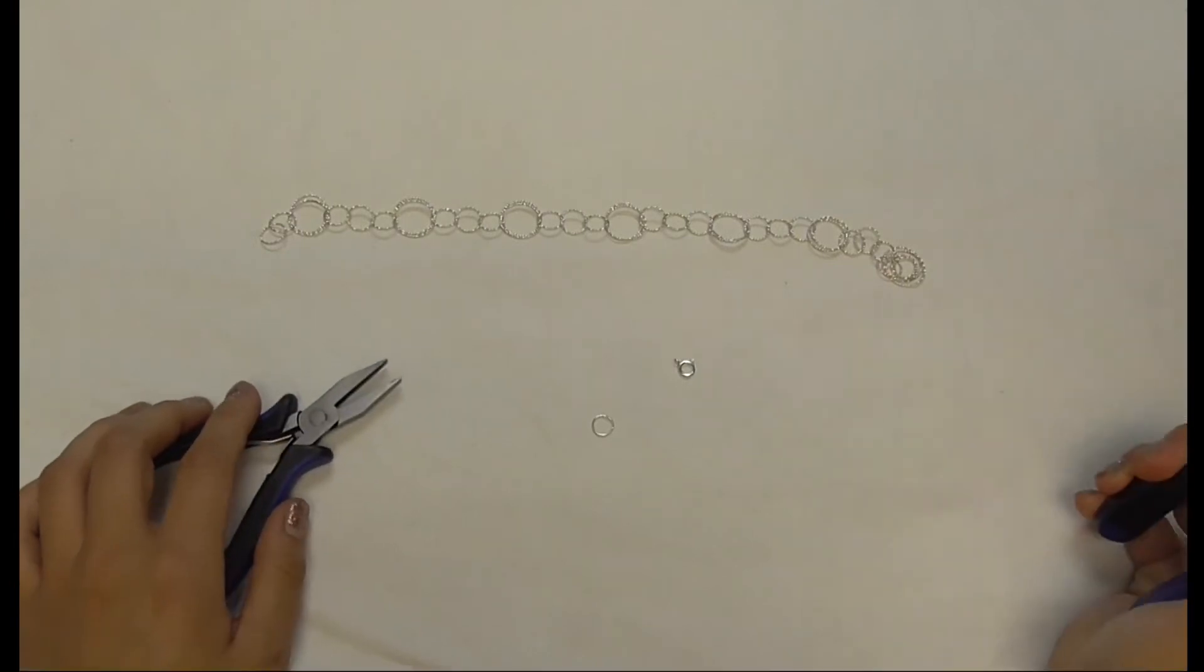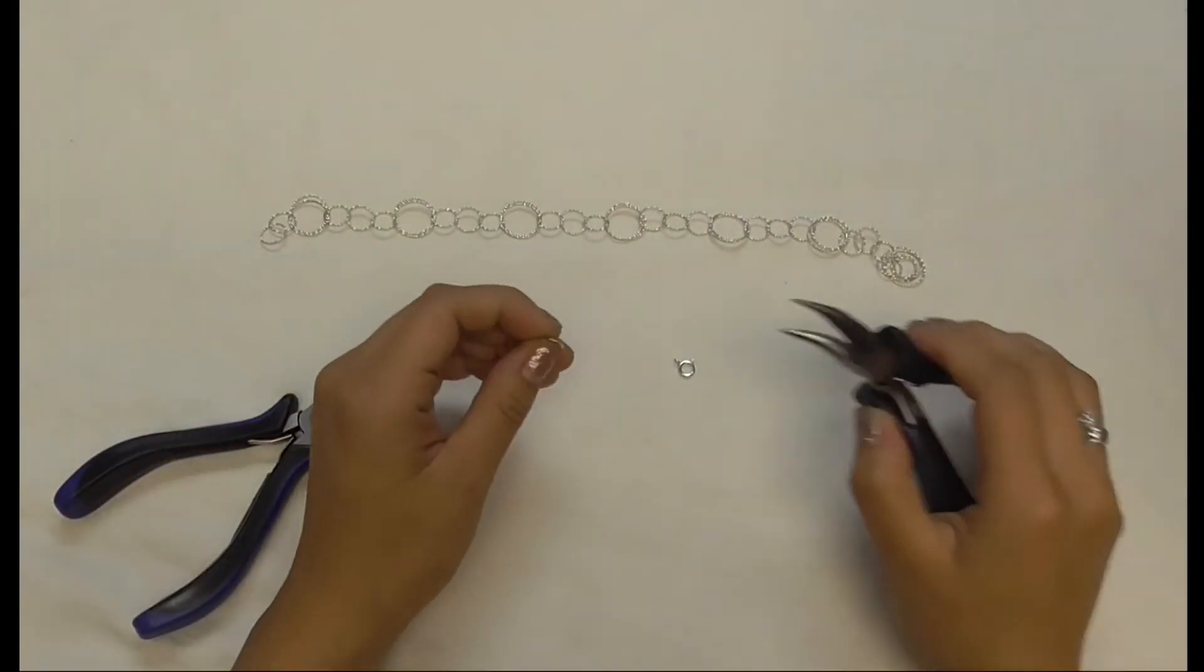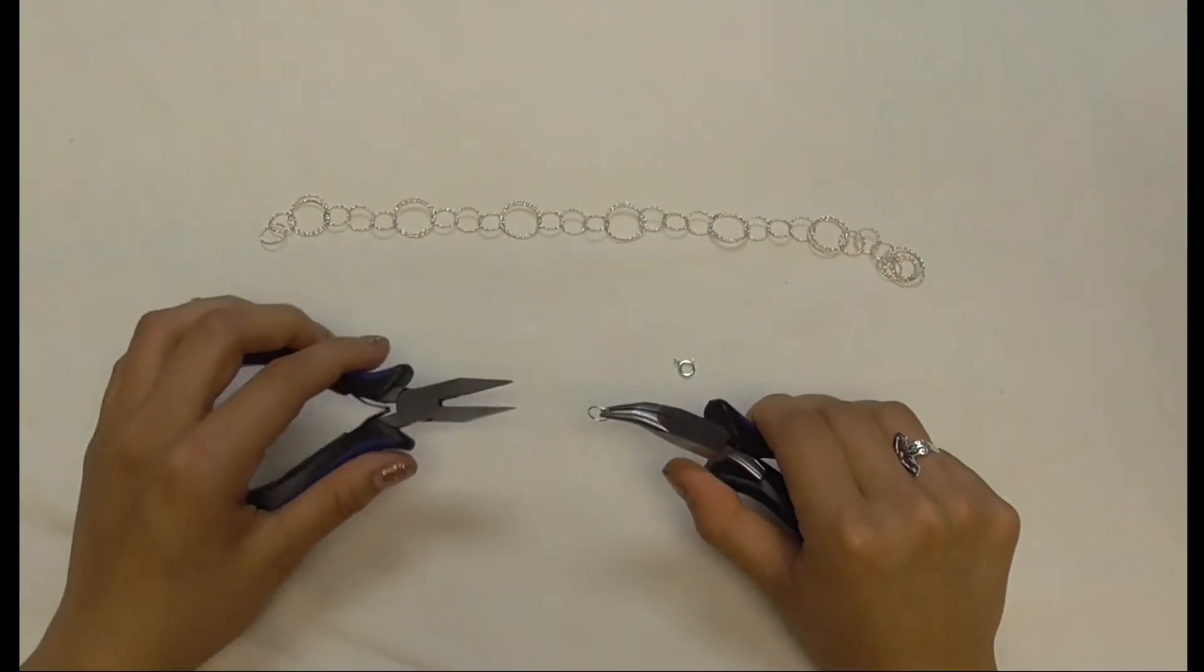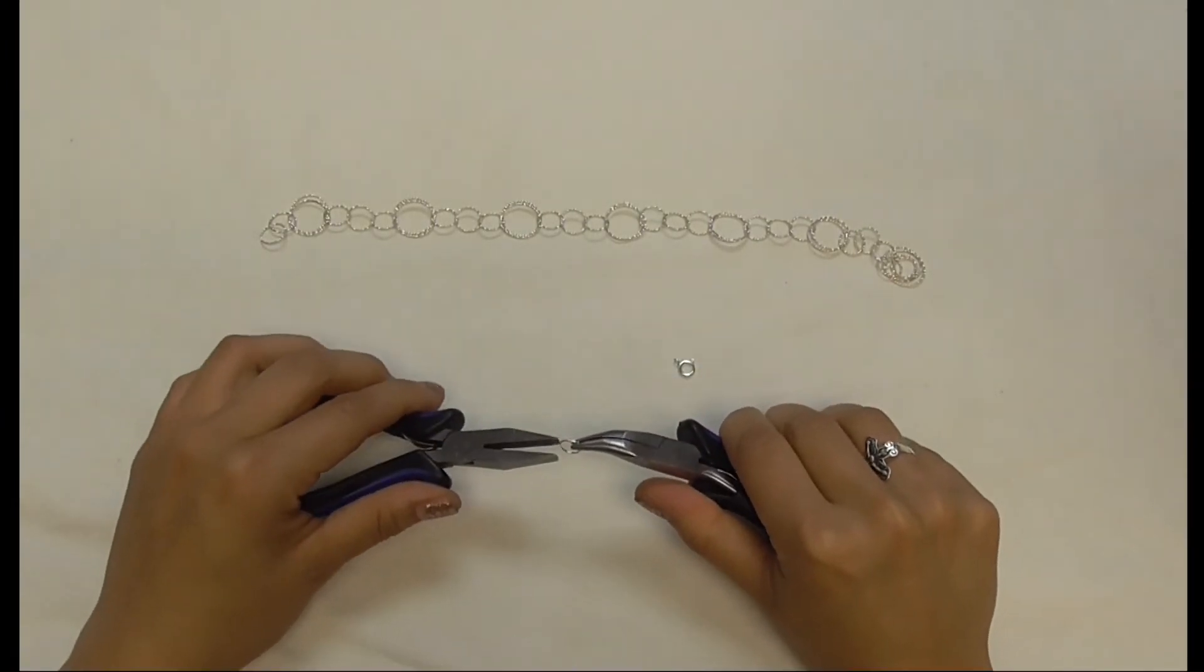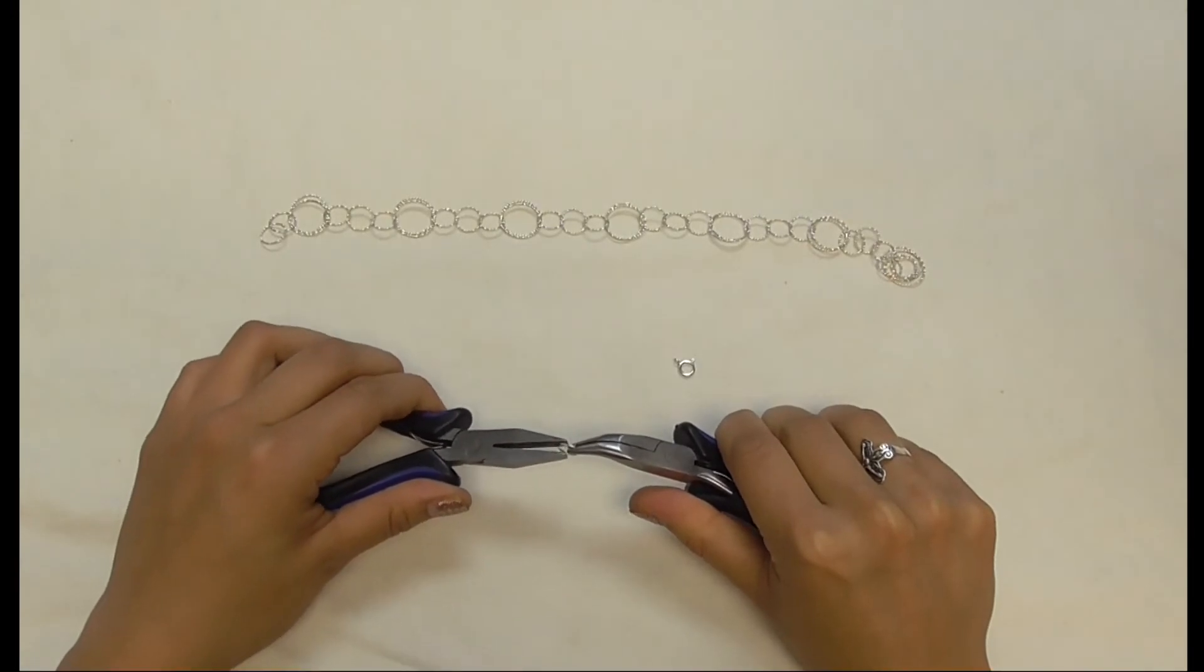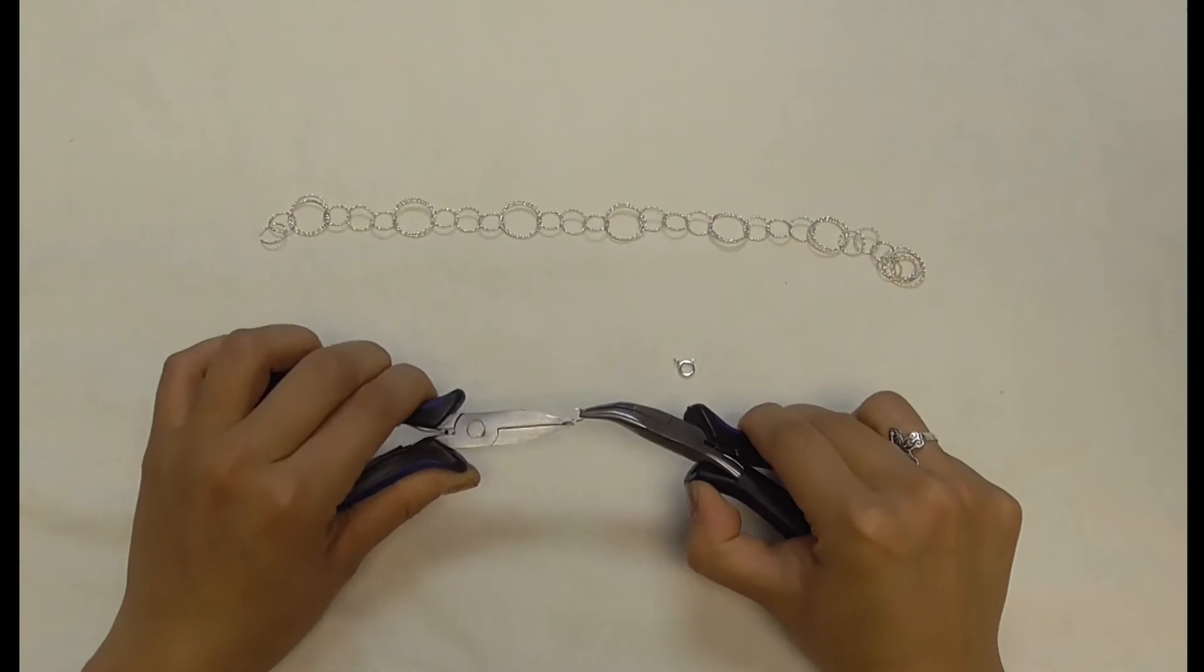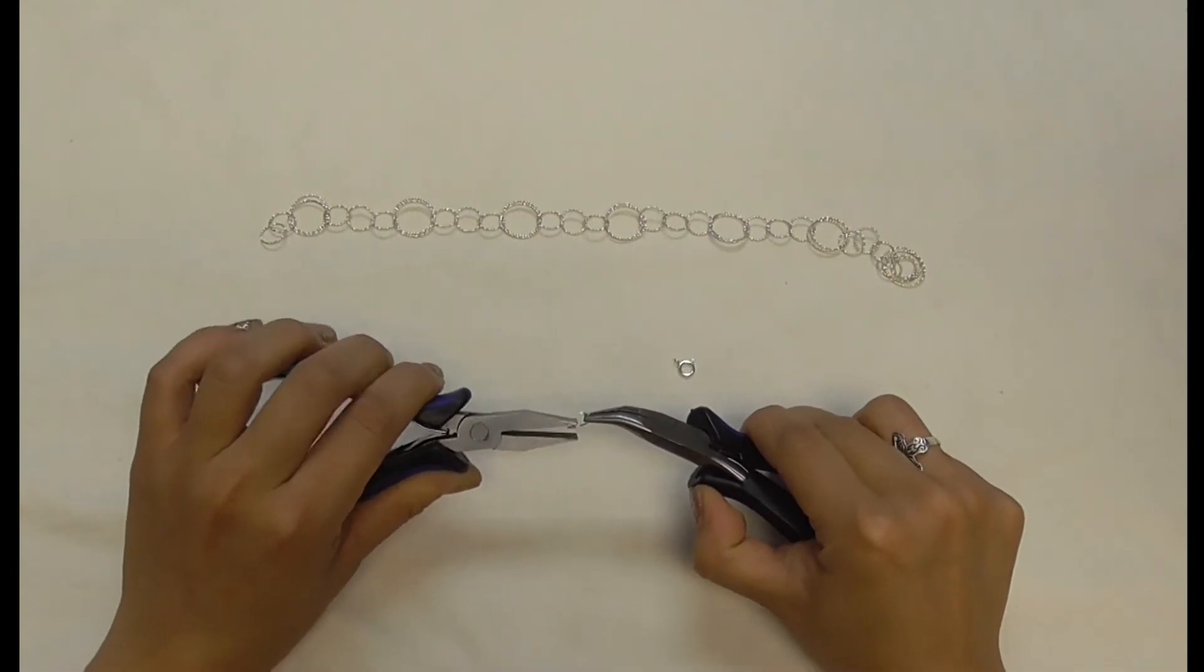So first you're going to take your pliers and grab your jump ring, taking one plier to each end of the opening and gently pull one end away and one end towards you, creating a gap.